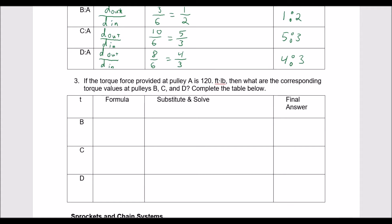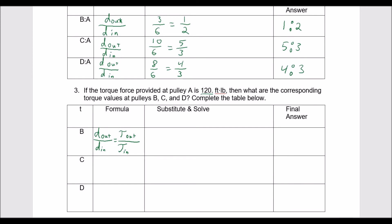And we know our ratios. We know that the diameter out over diameter in is equal to the torque out over torque in, τ_out over τ_in. And so we want to substitute and solve, and we are trying to find what the torque will be at B, C, and D. In this case B, if the input torque is 120 at A. So we use our information from above.